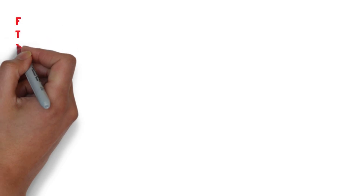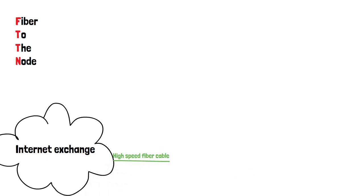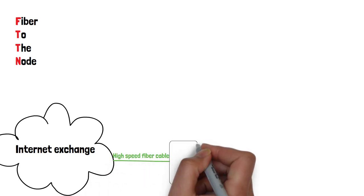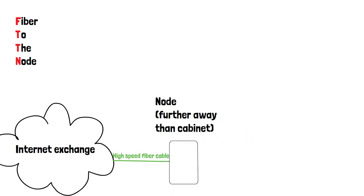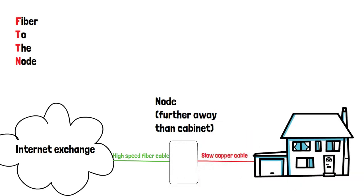Let's move on to FTTN, or fiber to the node. FTTN uses fiber optic cables to connect to a node or junction box located in the neighborhood or building. This then uses traditional copper wiring to connect to individual homes or businesses.